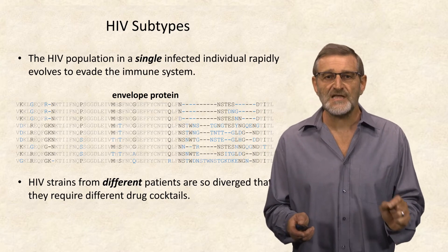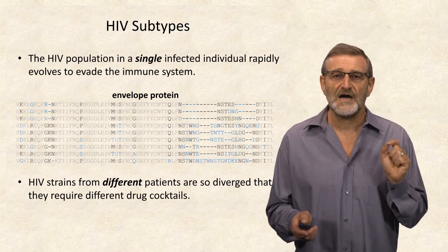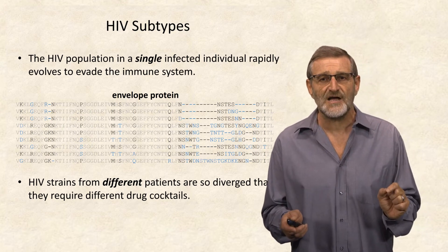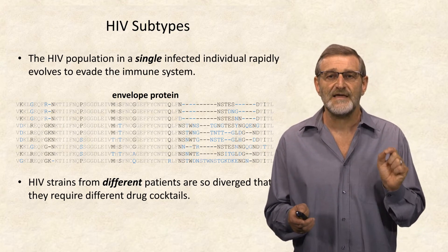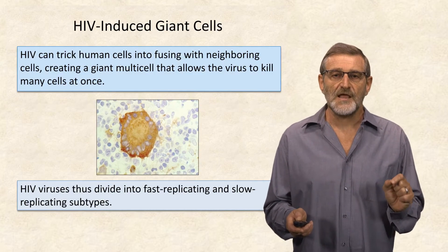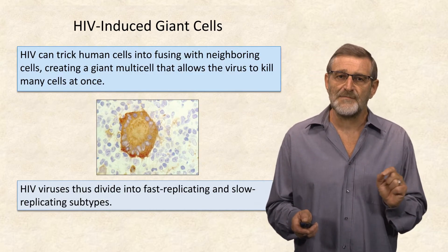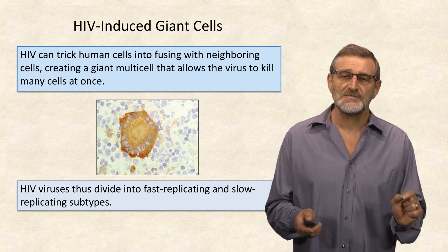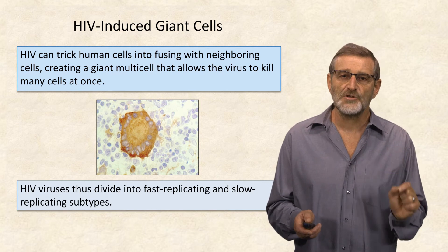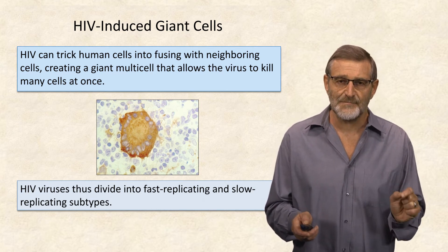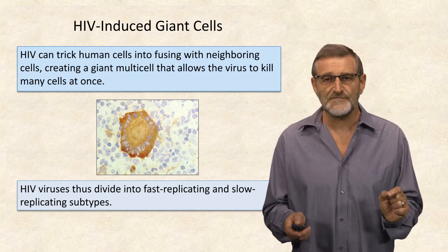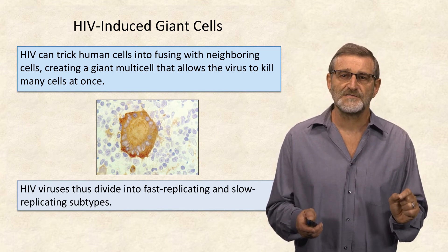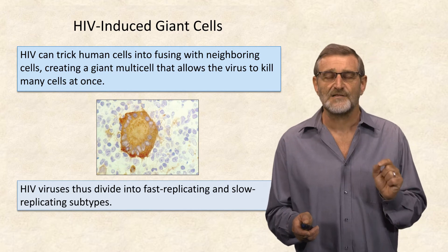HIV strains from different patients are so diverged that they require different drug cocktails, raising the challenge of classifying HIV subtypes. One of these subtypes may become fast-replicating and deadly — it happens when HIV tricks human cells into fusing with neighboring cells, creating a giant multi-cell that allows the virus to kill many cells at once.